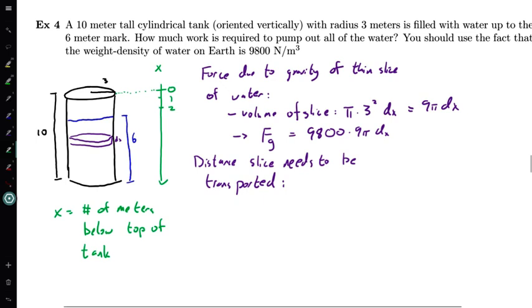So with this x value in mind, what I want to do is I want to think about when I'm thinking about the distance that this slice needs to be transported, well, it needs to be transported from wherever it is up to this point x equals zero. And the idea is that, well, if we're looking at the slice with position x, if we're looking at the slice which is x meters below the top of the tank, well, then we need to transport this slice x total meters.